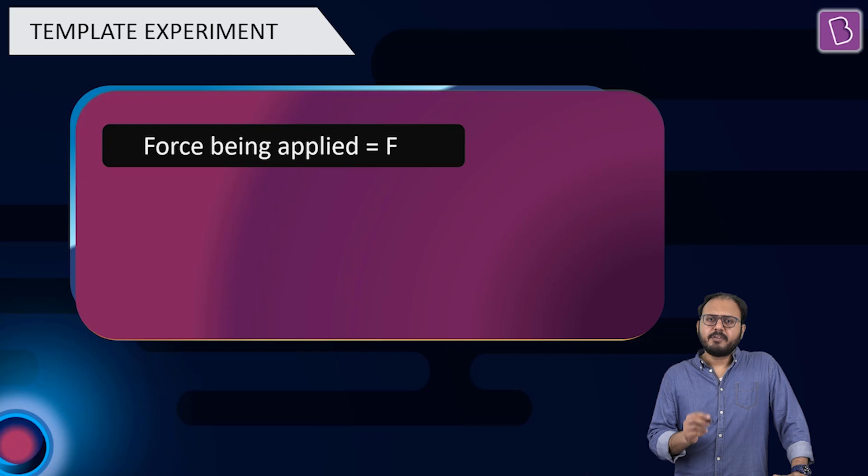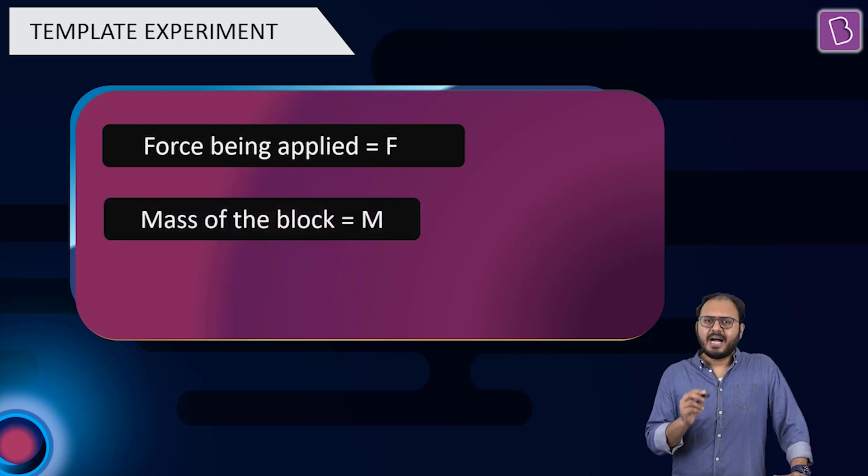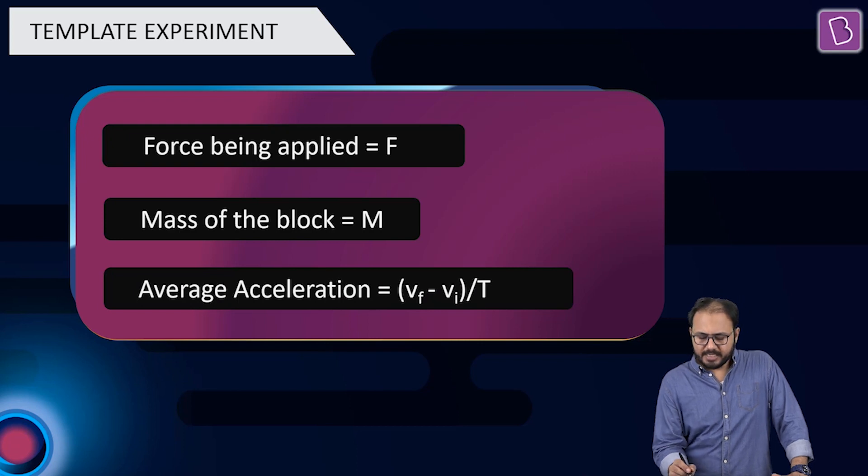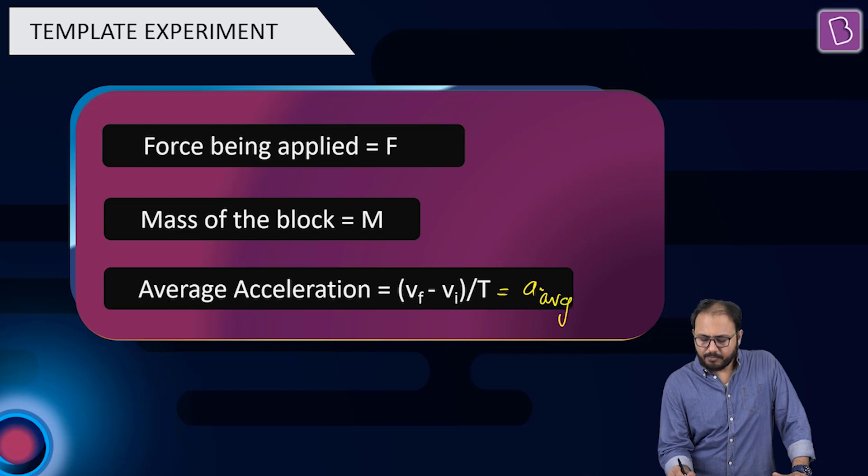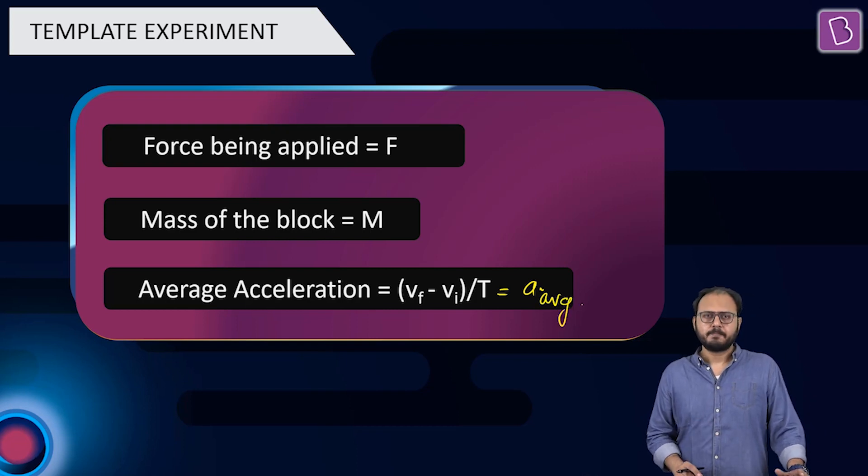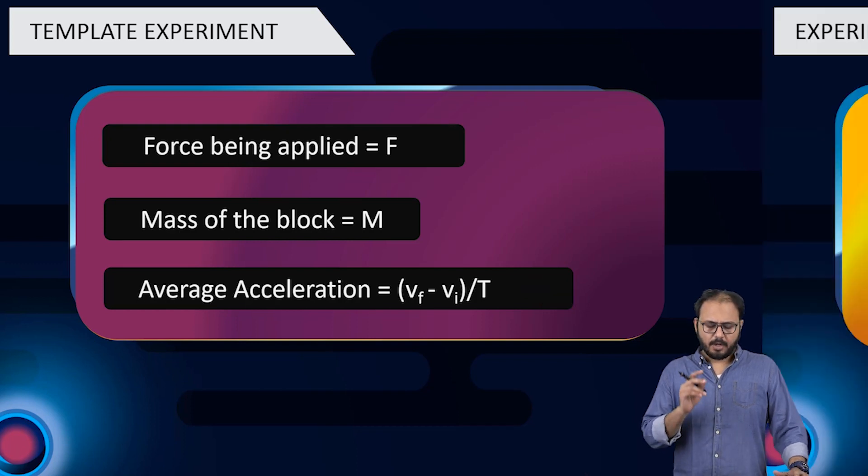Let capital F be the force applied. Let mass of the block be capital M. And the average acceleration of the body is equal to v final minus v initial. Of course, this is the formula for average acceleration: v final minus v initial upon time taken. Agreed? Alright.